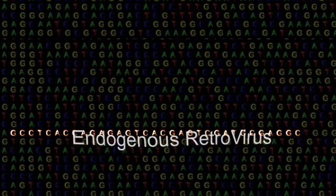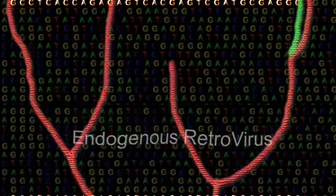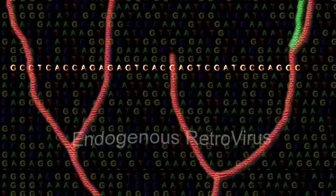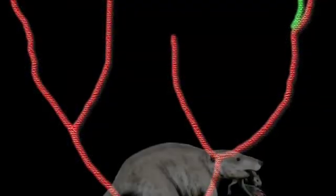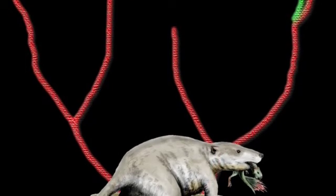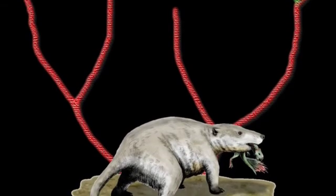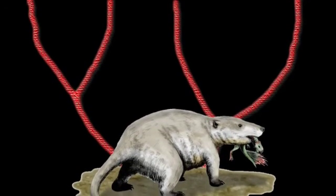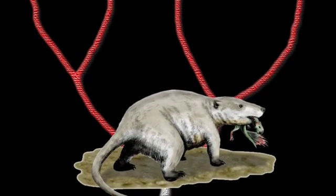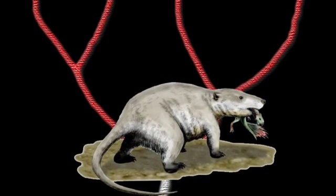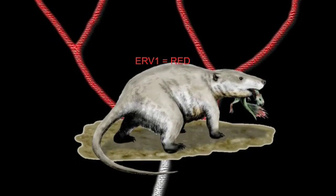Let's examine how endogenous retroviruses, or ERVs, would behave within a model of evolution by common descent. Suppose an ancient creature, let's call it Primus Mammalius, is the common ancestor of all modern mammals and is infected by a retrovirus that becomes endogenous. All of the Primus descendants would be expected to carry the same ERV — let's call it ERV-1 — in the same chromosomal location.